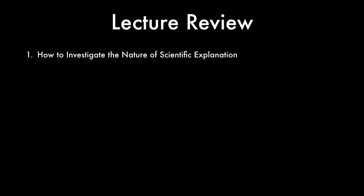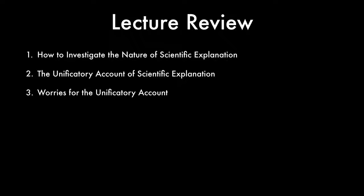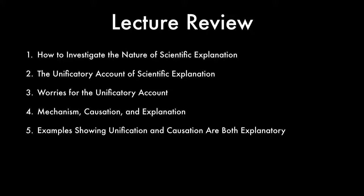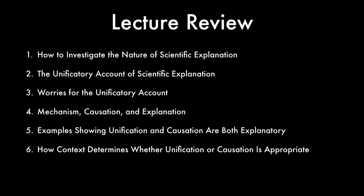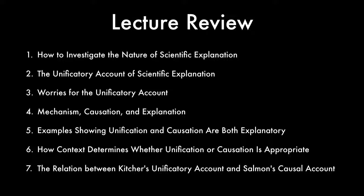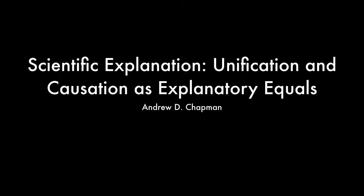In this lecture, we've examined seven topics: 1. How to investigate the nature of scientific explanation. 2. The unificatory account of scientific explanation. 3. Worries for the unificatory account. 4. Mechanism, causation, and explanation. 5. Examples showing unification and causation are both explanatory. 6. How context determines whether unification or causation is appropriate. 7. The relation between Kitcher's unificatory account and Salmon's causal account. Thank you.